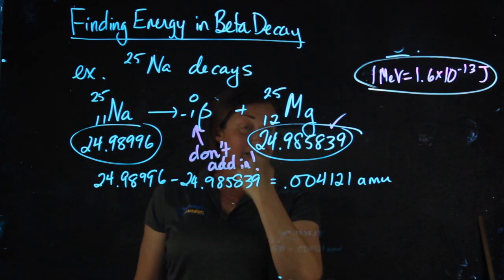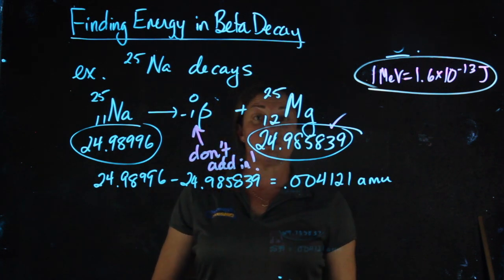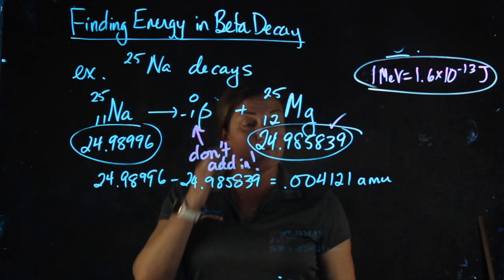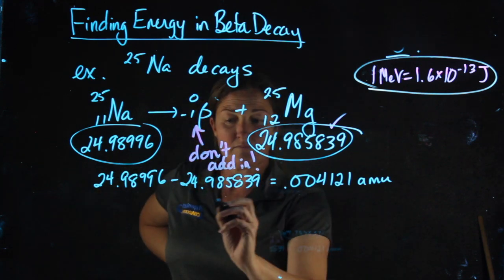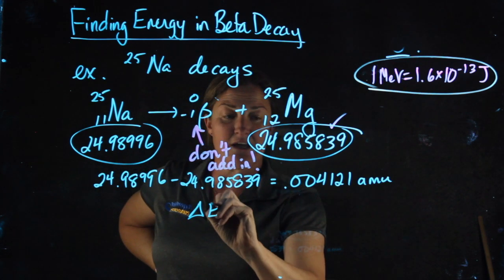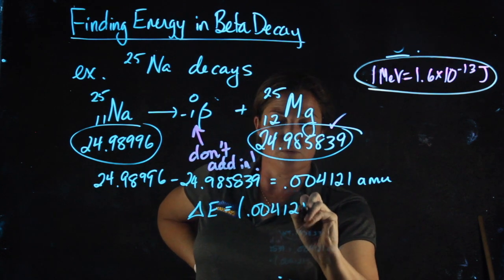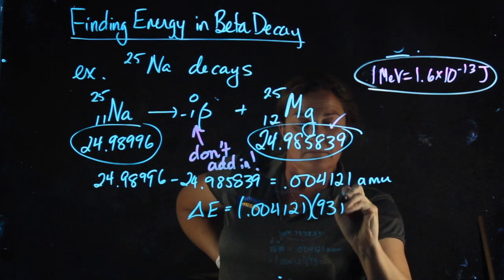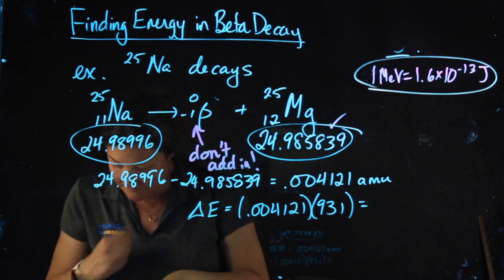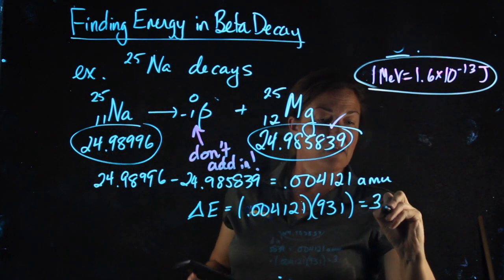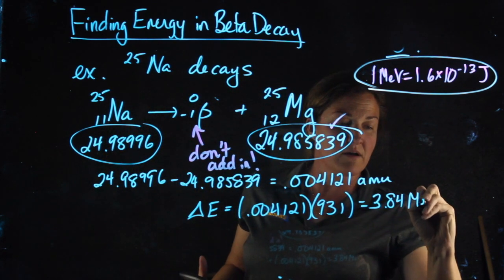Now to finish the problem, I need to convert AMU to mega electron volts and then also to joules. So to get my change in energy, 0.004121 times 931 yields 3.84 MeV.